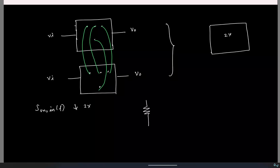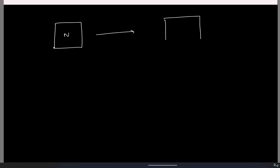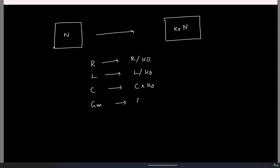If you have a resistor R in the network, putting two in parallel gives R/2. An inductance L becomes L/2; a capacitance C becomes 2C; and a transconductance Gm becomes 2·Gm. In general, you do not have to stop at a factor of 2 — the factor can be any arbitrary K_naught, even non-integer. Scaling the network by K_naught means: resistances become R/K_naught, inductances become L/K_naught, capacitances become C·K_naught, and Gm values become Gm·K_naught. If you do that, nothing changes with respect to the transfer function, DC gain — everything stays the same — but the noise PSD reduces.